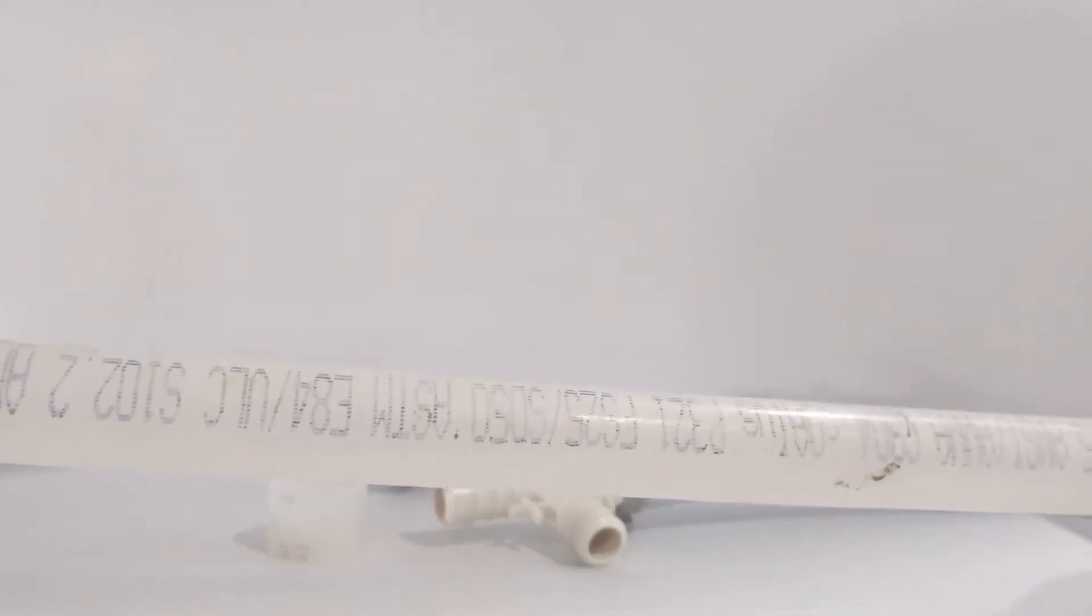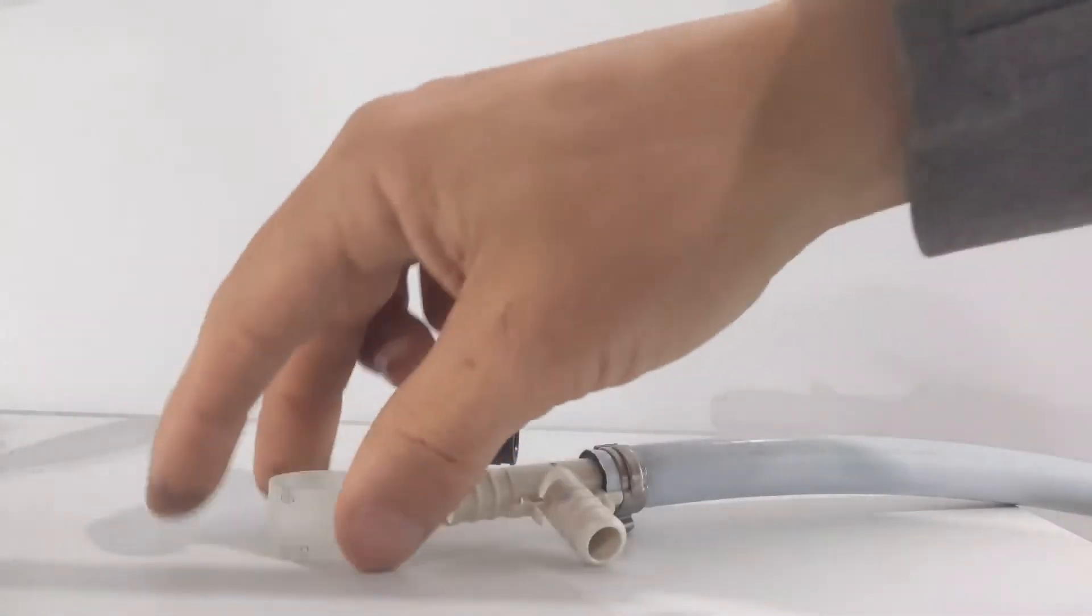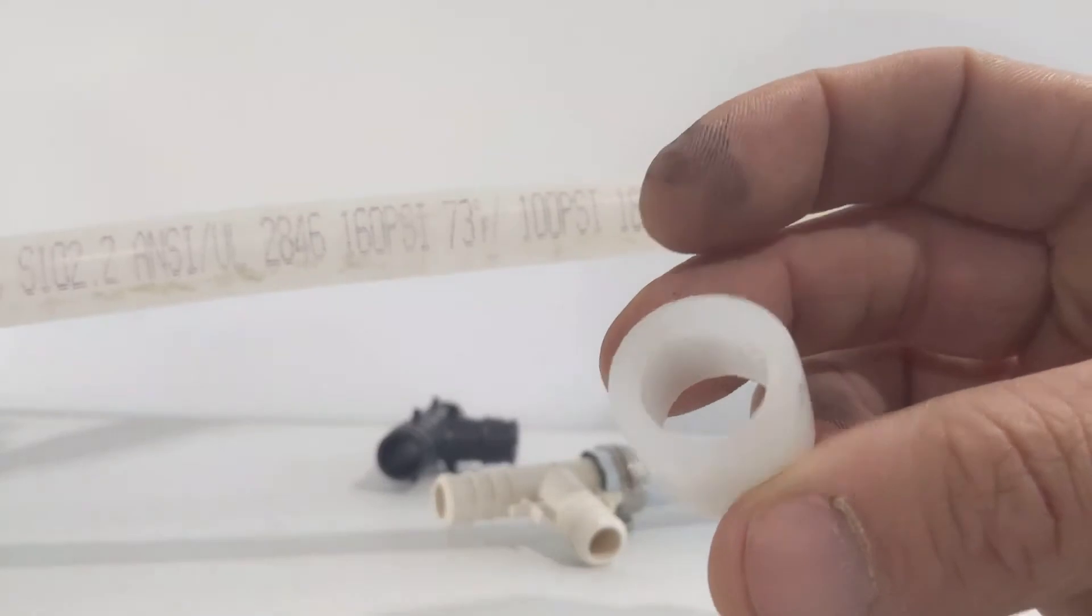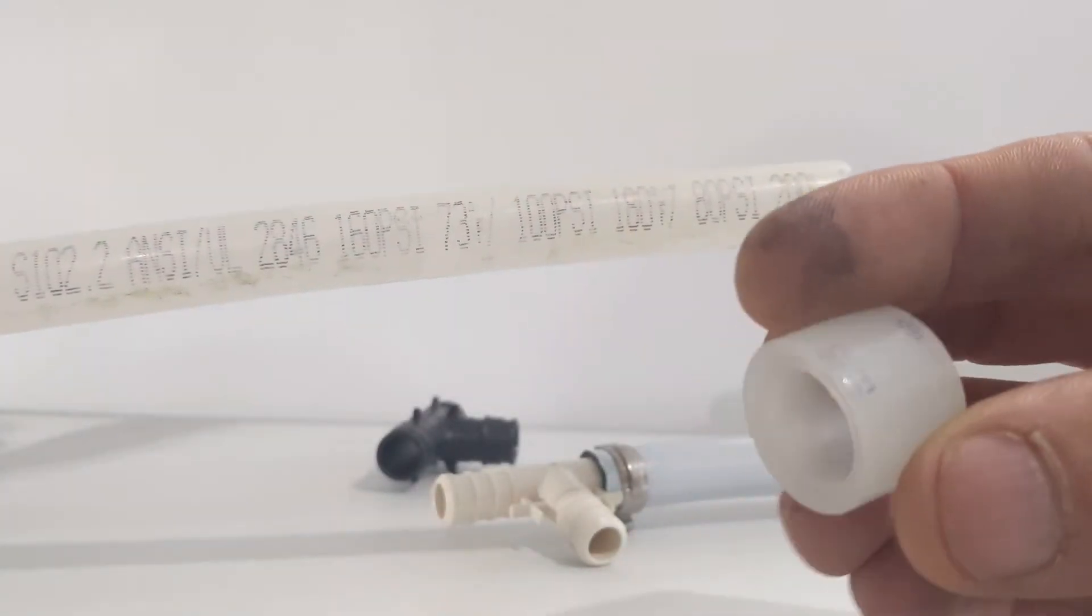Next we'll take a look at the PEX-A. This is by Uponor, or Wirsbo, depending on what you want to call it. This is a PEX-A pipe, and this is a PEX-A ring. It's an expandable ring.